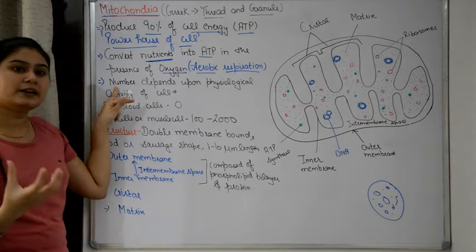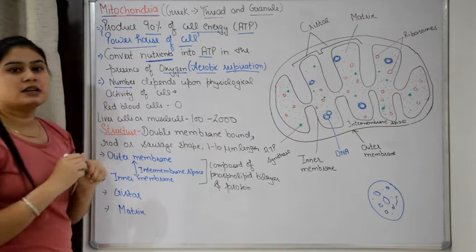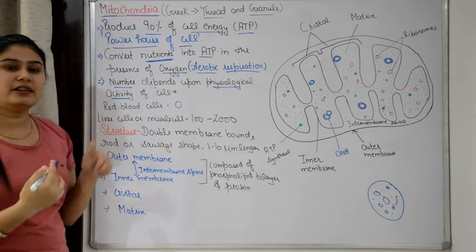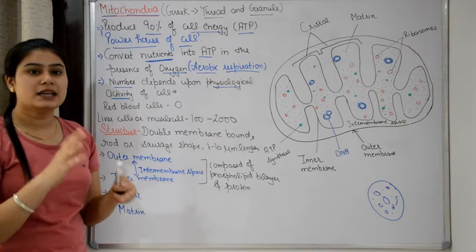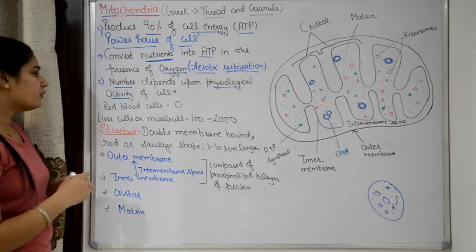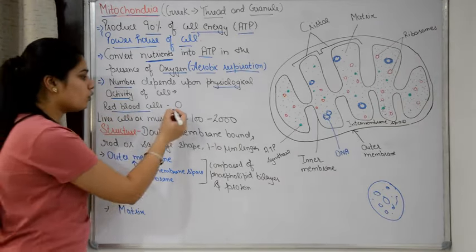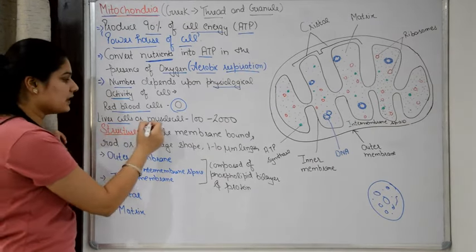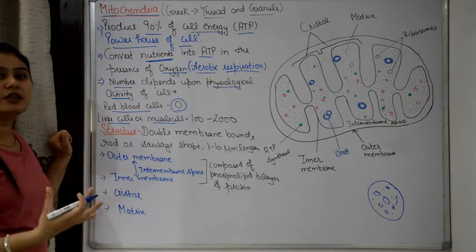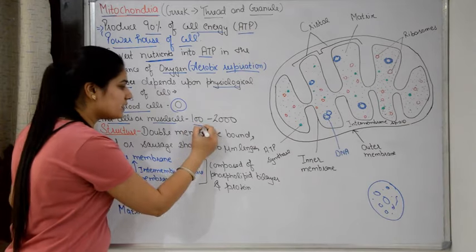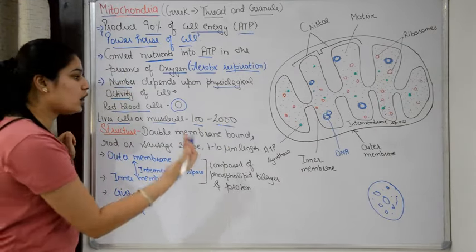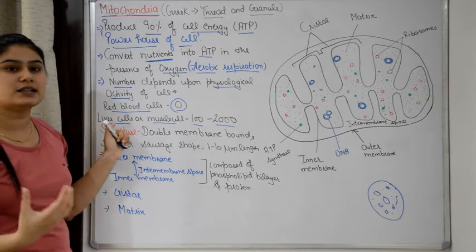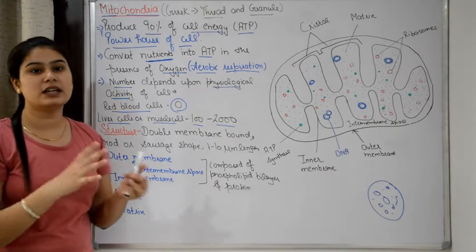The number of mitochondria in a cell depends on its physiological or metabolic activity — how much activity the cell is performing. For example, red blood cells have no mitochondria at all. But the most active cells, like liver cells or muscle cells, have a large number of mitochondria — even more than 2,000 mitochondria. So the number depends on how many activities they are performing.